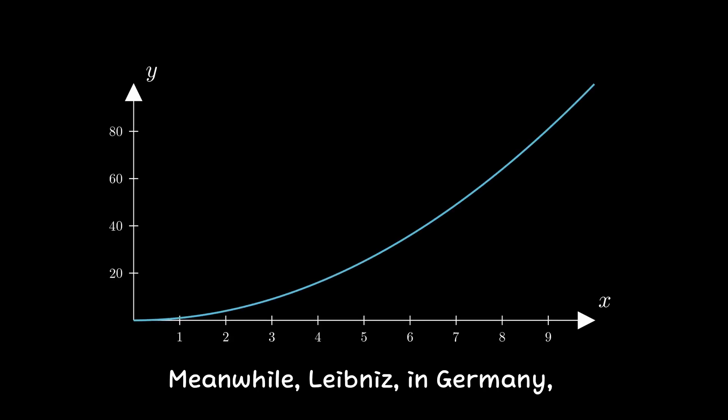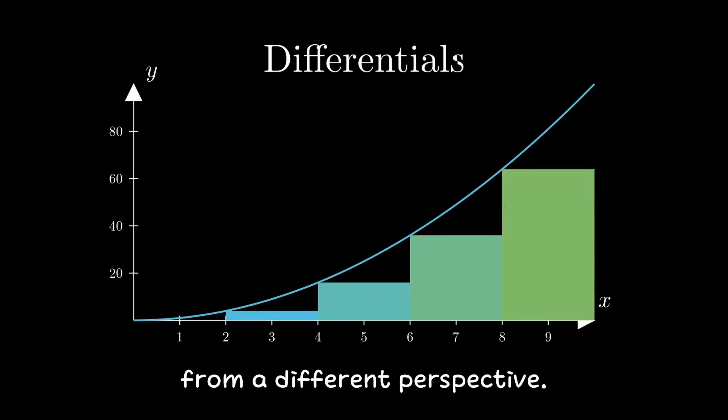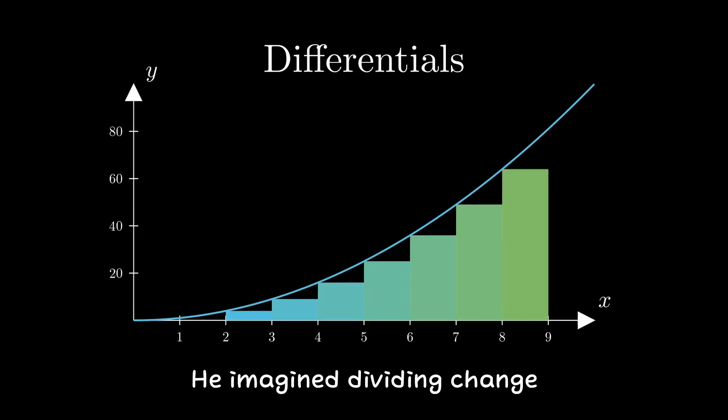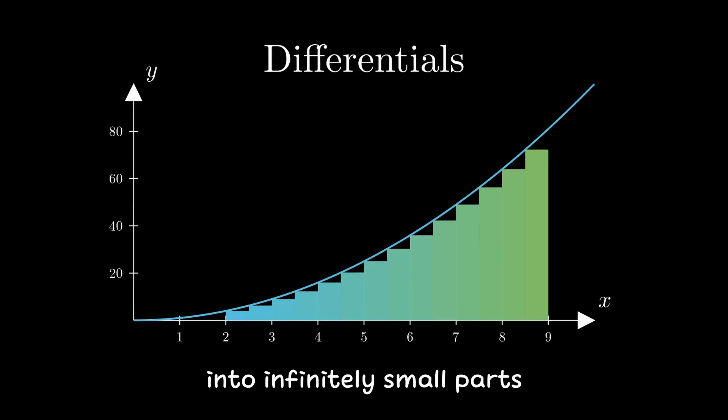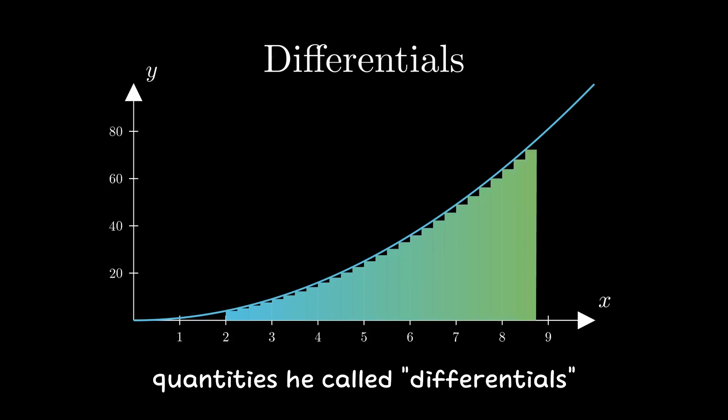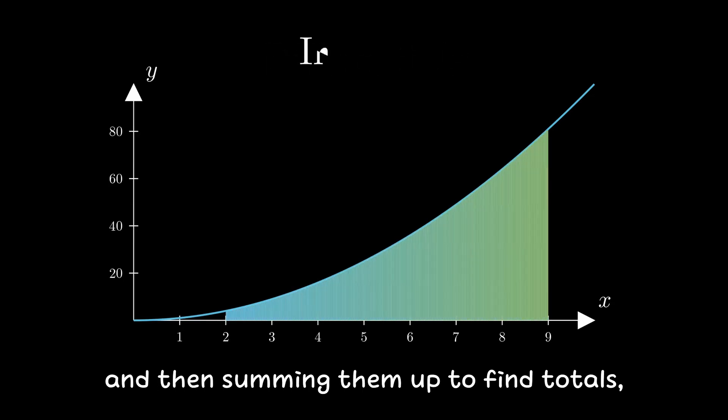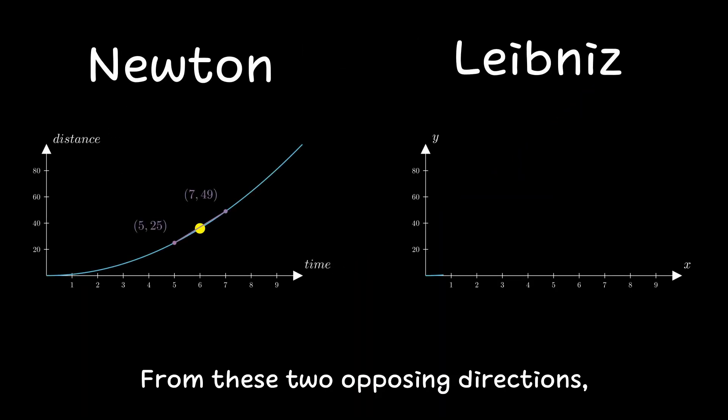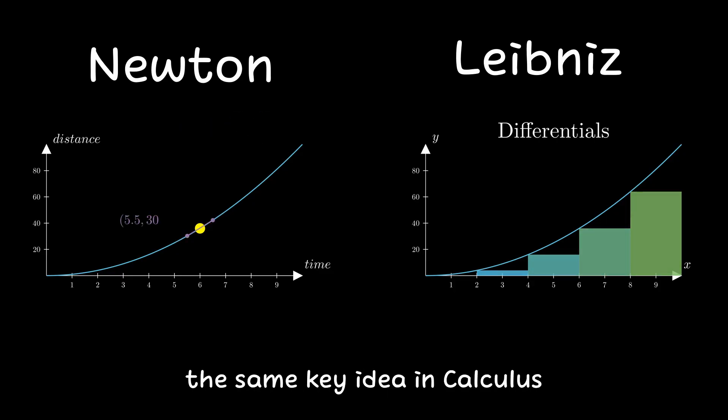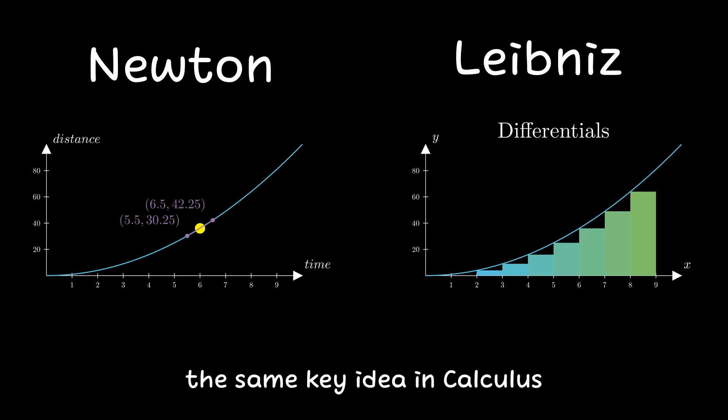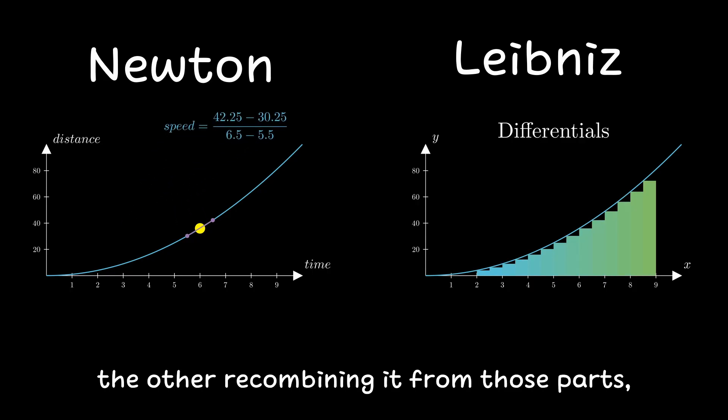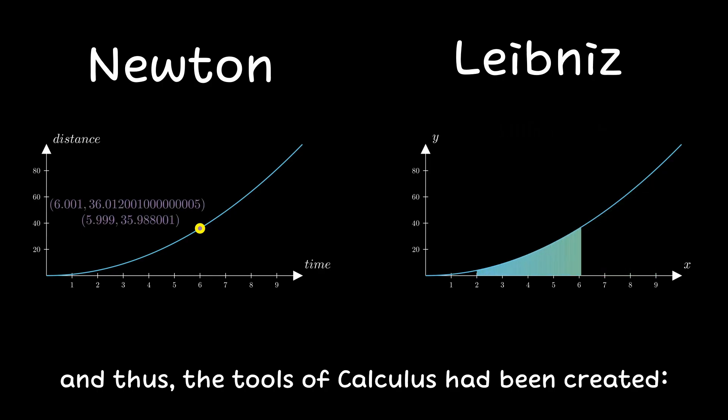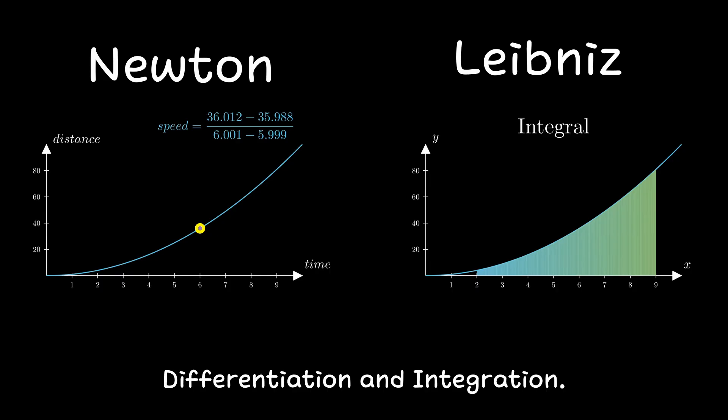Meanwhile, Leibniz in Germany approached the same problem from a different perspective. He imagined dividing change into infinitely small parts, quantities he called differentials, and then summing them up to find totals, which he referred to as integrals. From these two opposite directions, Newton and Leibniz reached the same key idea in calculus, one splitting motion into parts, another recombining it from those parts, and thus, the tools of calculus had been created, differentiation and integration.